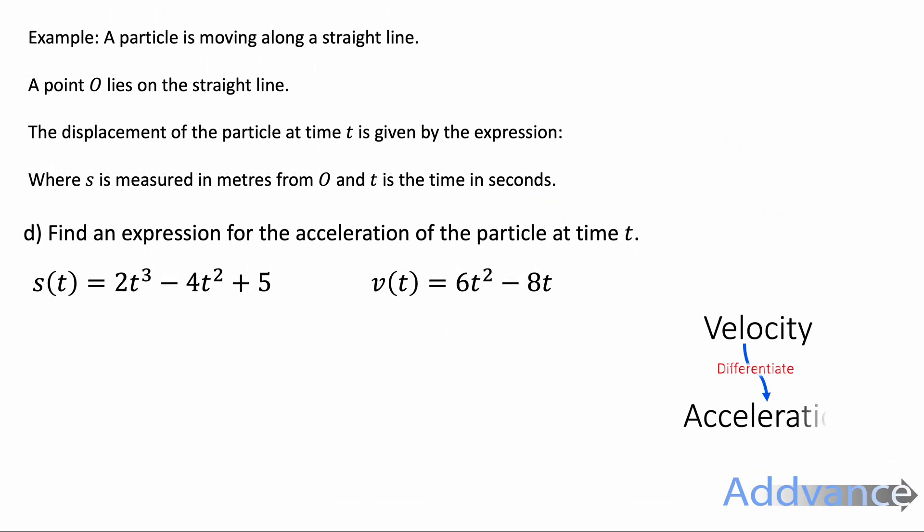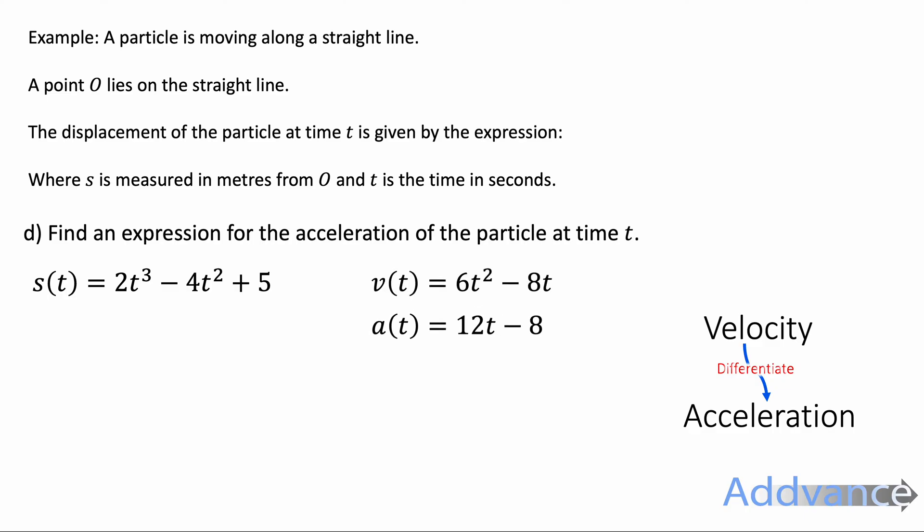Part D: find the expression for the acceleration of the particle at time t. We differentiate velocity to get acceleration. Differentiating v(t) = 6t² − 8t gives a(t) = 12t − 8. All we did was differentiate velocity to find the expression for acceleration.